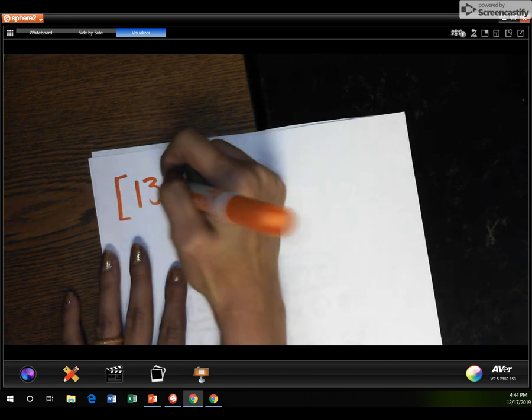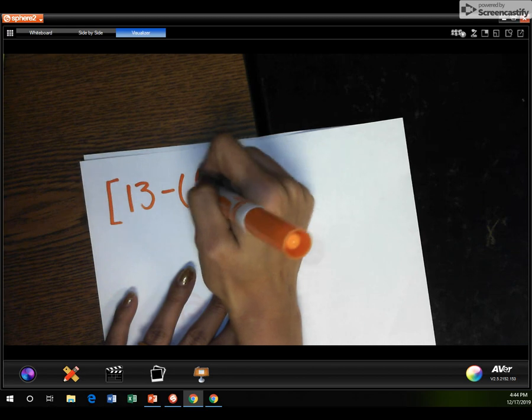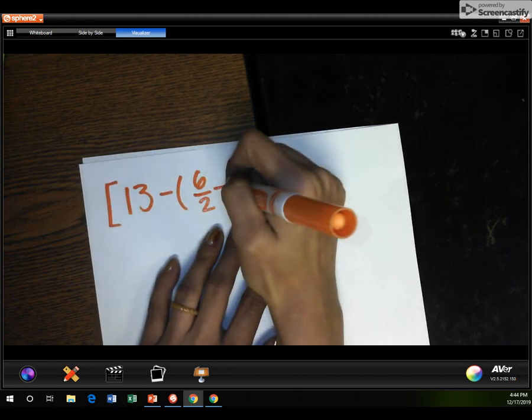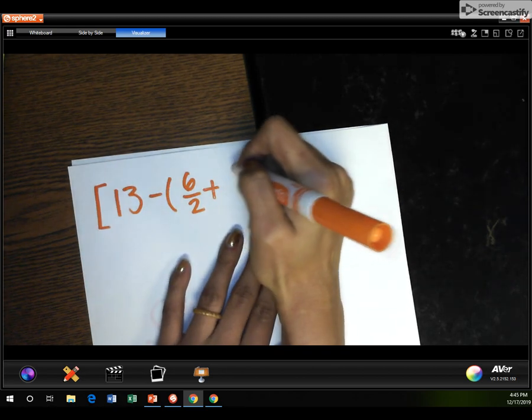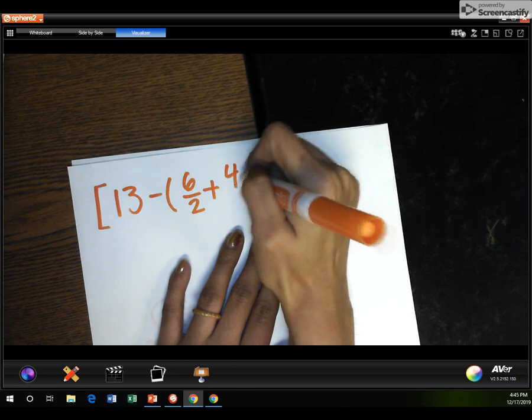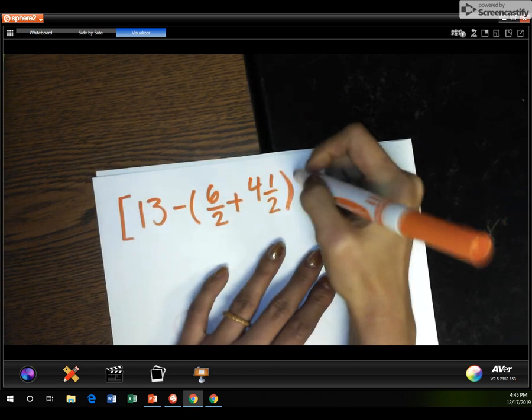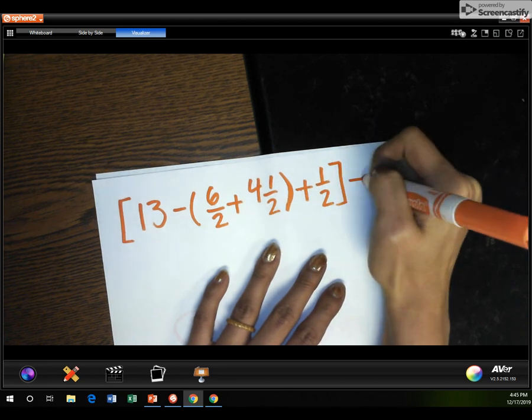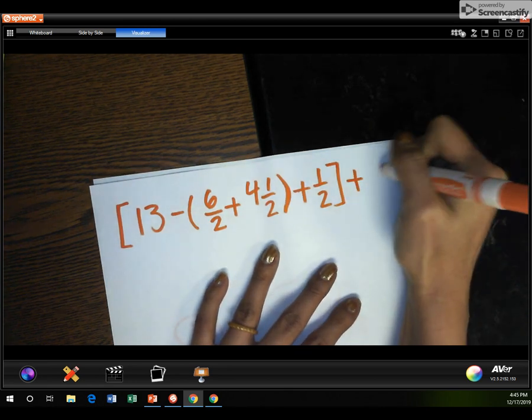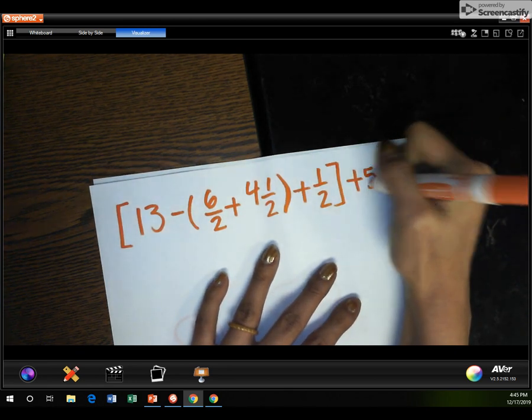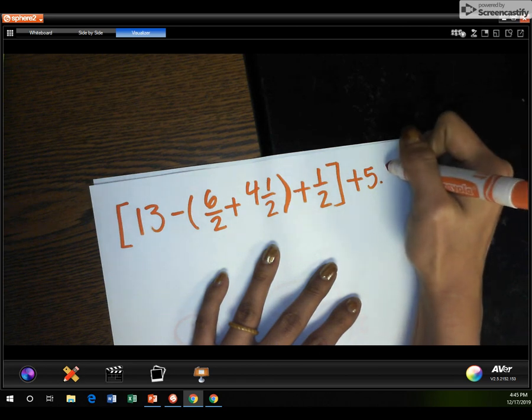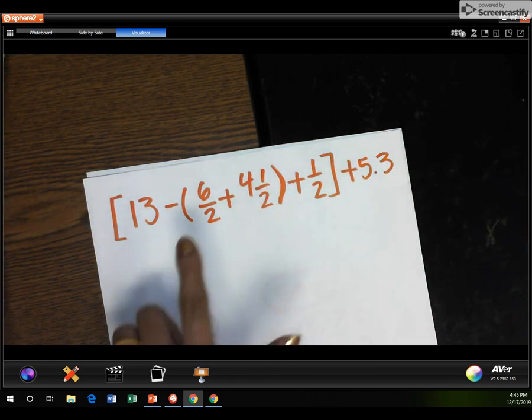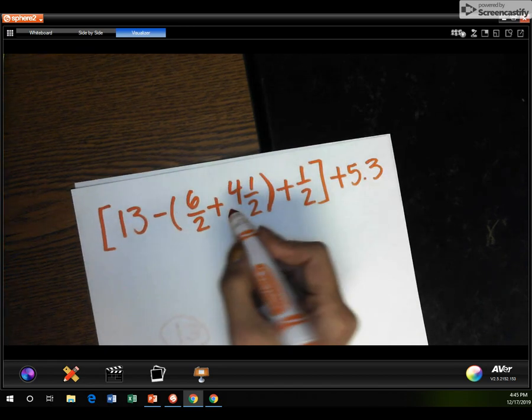All right. So let's see. 13 minus 6 halves plus 4 and 1 half. And plus 1 half. What is it? 5 and 3 tenths. Ooh, some fractions and mixed numbers and decimals. I just made this a one up. So let's see if it even works. Hopefully it works.